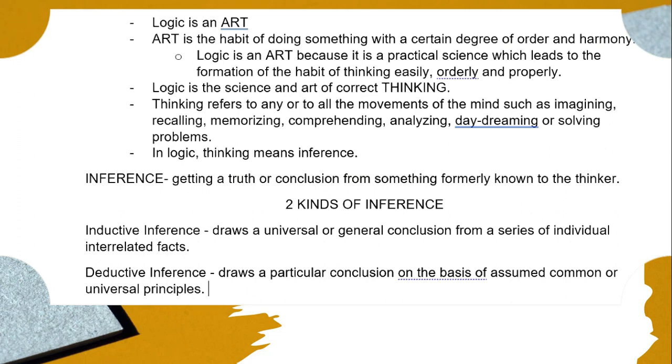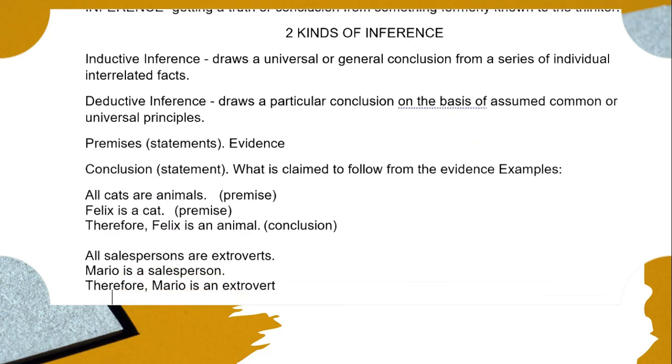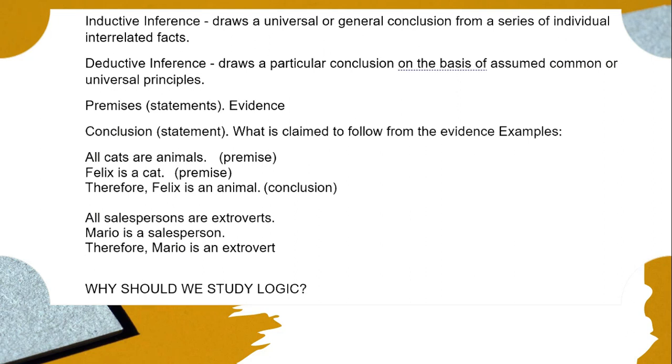So we have examples here. All cats are animals—that is our first premise, our first statement. Felix is a cat—our second premise. Felix is an animal is our conclusion. This is an example of a deductive inference. All cats are animals; such premise or statement is based from the fact that all cats that we have seen, all cats that humans have had seen, are animals.